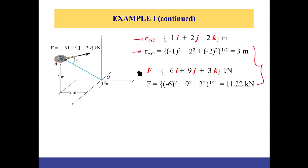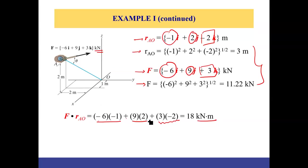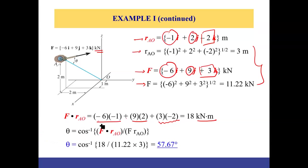Vector AO and force vector F, along with both their magnitudes, are calculated. The dot product is: (−1)(−6) + (2)(9) + (−2)(3) = 18 kN·m. The angle theta is then 18 divided by the magnitude of F (11.22 kN) times the magnitude of AO (3 m), giving theta = 57.67 degrees.